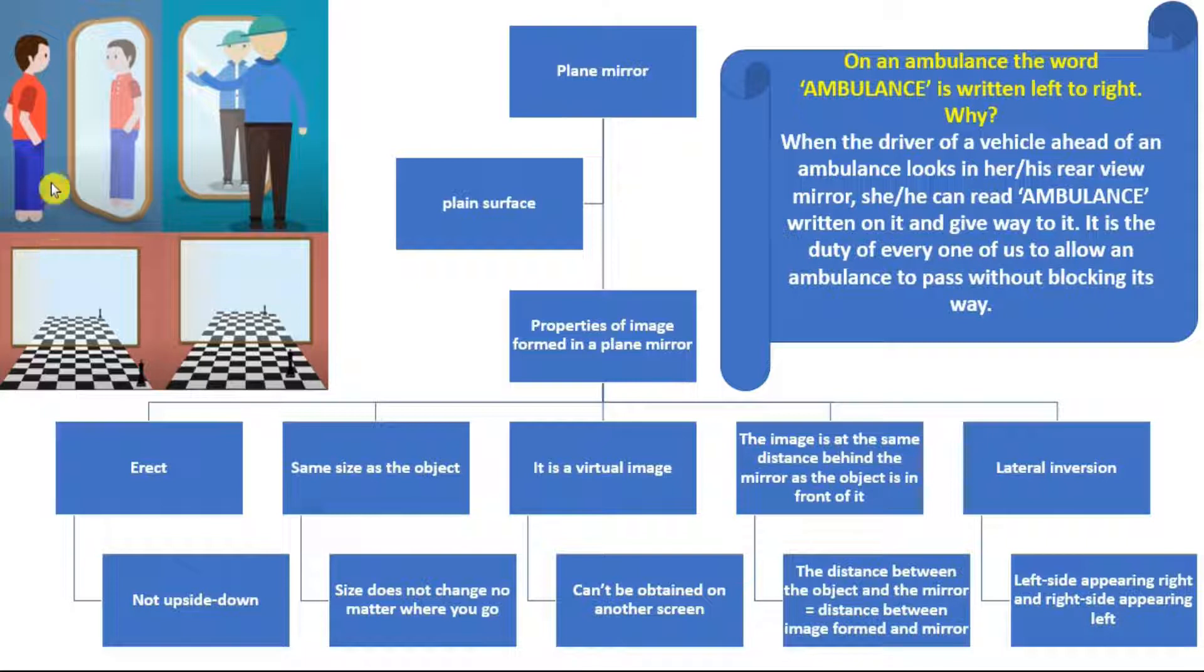It is a virtual image. It cannot be obtained on another screen. Like I said, it can only be seen on the mirror. You cannot reflect it on a wall or some other screen. Then the image is at the same distance behind the mirror as the object is in front of it. And what this suggests is that the distance between the object and the mirror is equal to the distance between the image formed and the mirror.